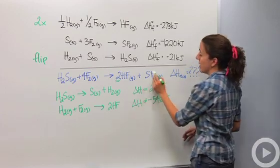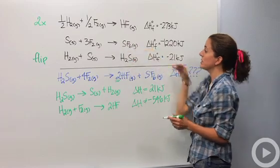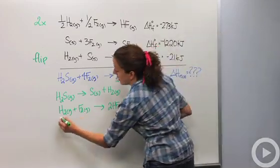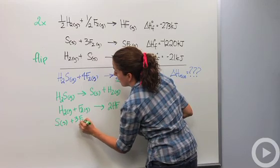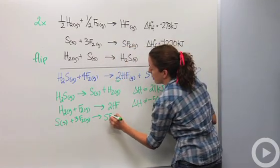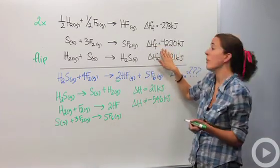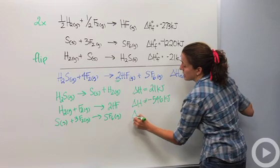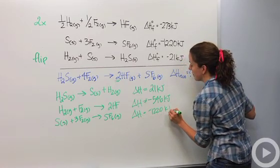Then let's go to SF6. SF6 is a product. Here it's a product too, so I can just use the same equation. So I have sulfur solid plus 3 fluorine gases, yields sulfur hexafluoride. And since I'm not manipulating this equation in any way, I can just say my delta H is the same, negative 1220 kilojoules. Okay.